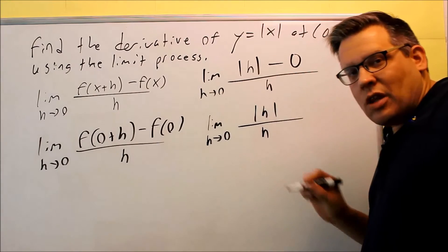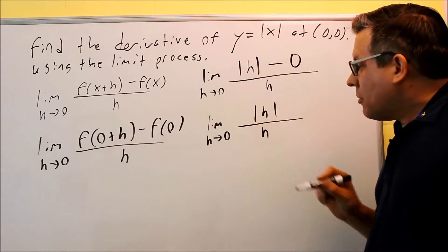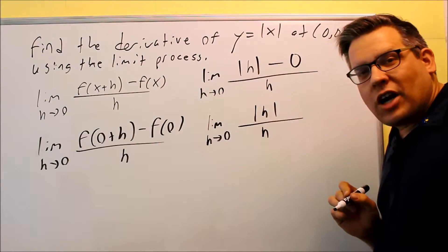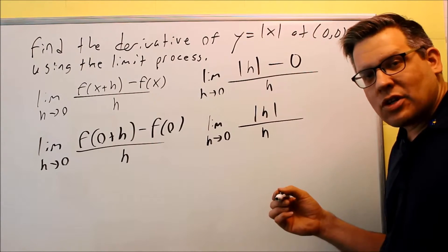Now, let's take a look at this limit and think this through what it could be. Of course, I can't put 0 in here because I'm dividing by 0. But, if I wanted to find this limit, what I would do is try to find the limit from the left-hand side and the right-hand side.